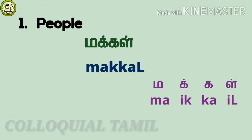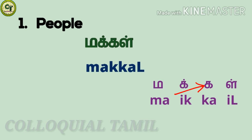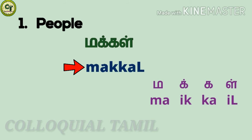For 'people': makkal. Ma, a short zone letter. Ik, a consonant. Ka, a short zone letter. Il, a consonant. This is big il — while pronouncing it, your tip of the tongue touches the middle roof of your mouth. Together: makkal.